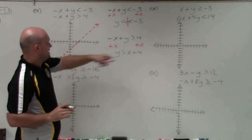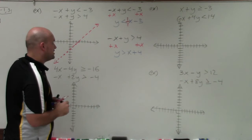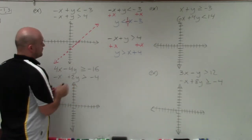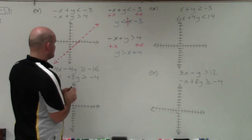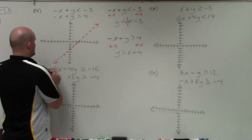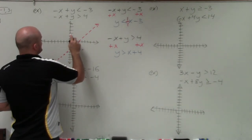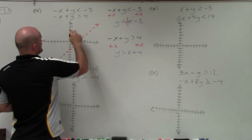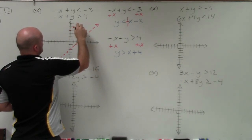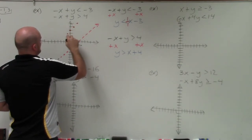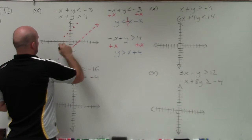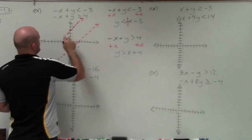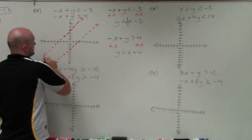For y is greater than x plus 4, I go up to the y-intercept at 4, and follow the same slope: up 1 over 1, down 1 over 1. You can see these are parallel lines because they have the same slope.